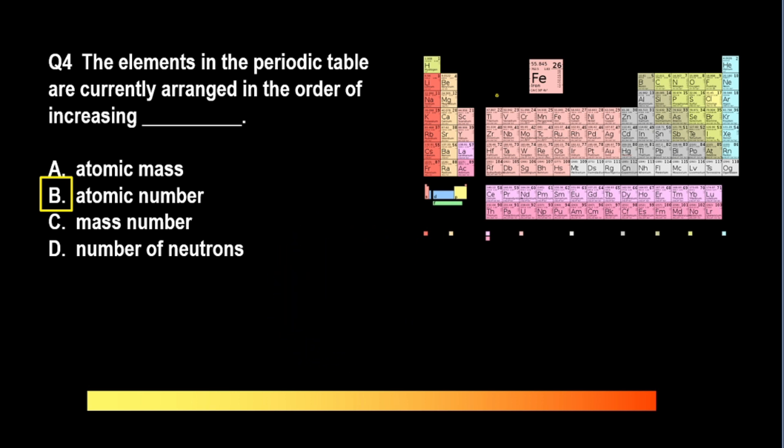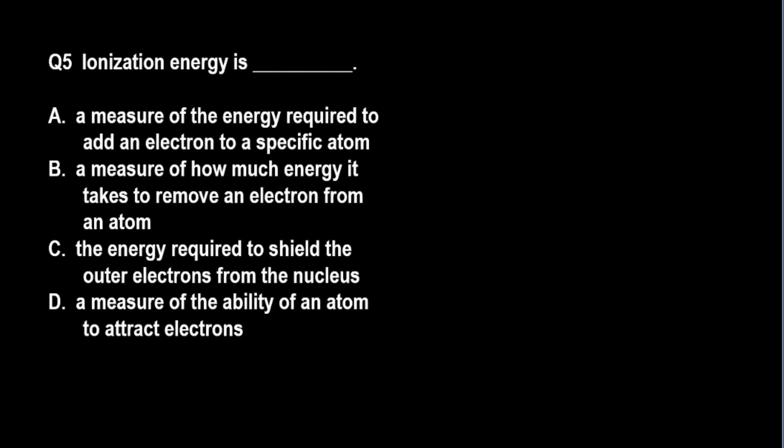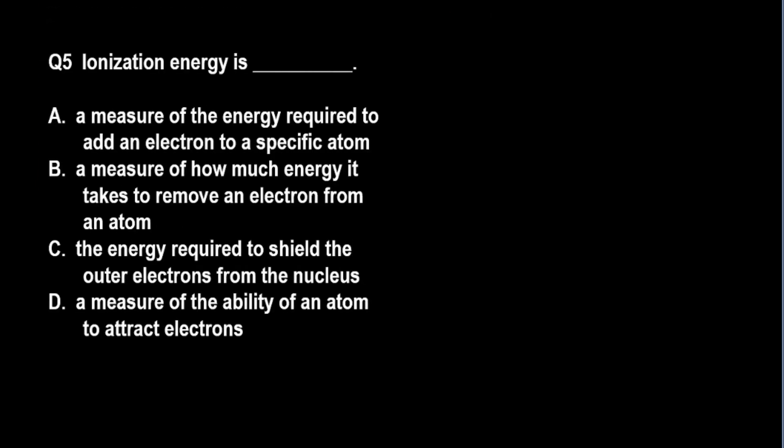Question number 5. Ionization energy is: A. A measure of the energy required to add an electron to a specific atom. B. A measure of how much energy it takes to remove an electron from an atom. C. The energy required to shield the outer electrons from the nucleus. D. A measure of the ability of an atom to attract electrons.